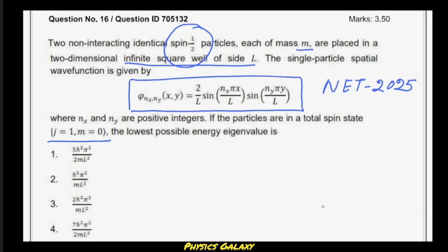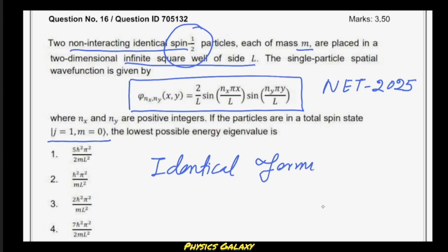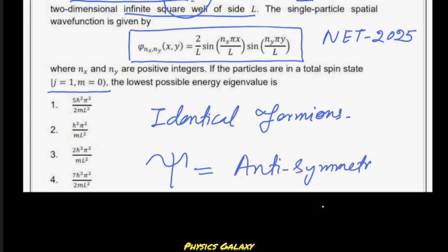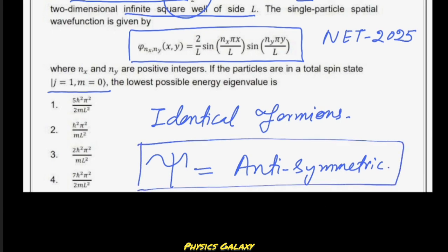We have identical spin one-half particles, which means we have identical fermions. For identical fermions, we know that Psi has to be anti-symmetric — that's what our total wave function Psi has to satisfy.